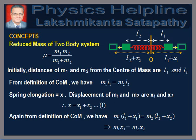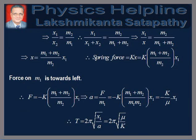Now the distances of the masses from O are L1 + X1 and L2 + X2. Therefore by definition, M1(L1 + X1) = M2(L2 + X2). Since M1·L1 = M2·L2, we get M1·X1 = M2·X2, which implies X1/X2 = M2/M1. Therefore X1/(X1 + X2) = M2/(M1 + M2), or X = (M1 + M2)/M2 · X1. Therefore the spring force F = k·X = k·(M1 + M2)/M2 · X1.